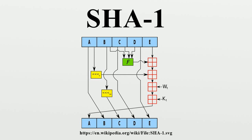SHA-2, published in 2001, is significantly different from the SHA-1 hash function. In 2005, cryptanalysts found attacks on SHA-1 suggesting that the algorithm might not be secure enough for ongoing use. NIST required many applications in federal agencies to move to SHA-2 after 2010 because of the weakness.